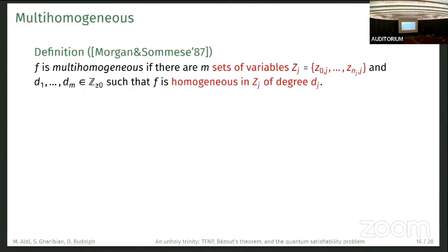Now let me go to the multi-homogeneous setting. What is a multi-homogeneous equation? This definition is from Morgan and Somese. We say polynomial F is multi-homogeneous if we can partition the variables into m sets with degrees such that F is homogeneous in Z_j of degree d_j.